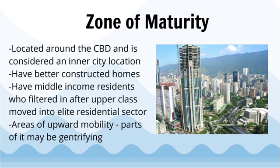The zone of maturity is located around the CBD and is considered an inner city location. It has better constructed homes and middle-income residents who filtered in after the upper class moved to the elite residential sector. It is an area of upward mobility, and parts of it may be gentrifying.